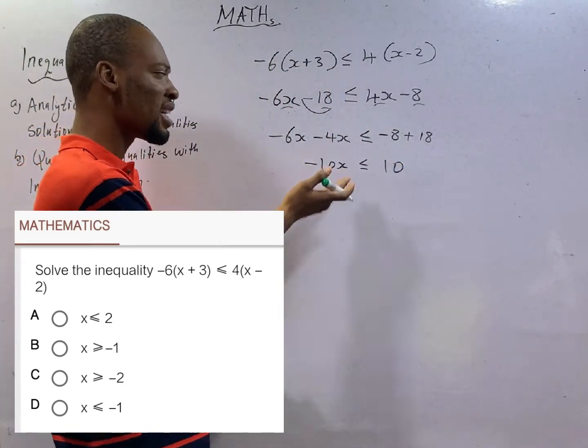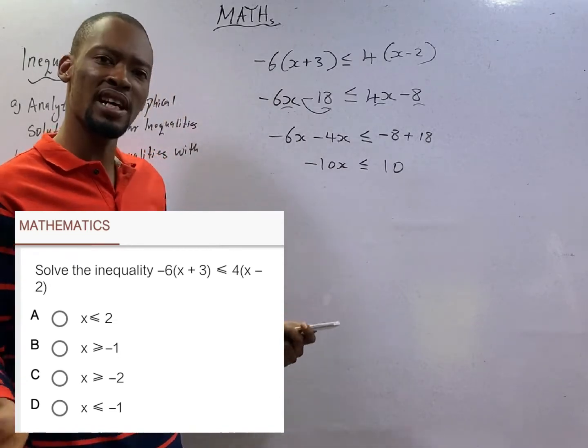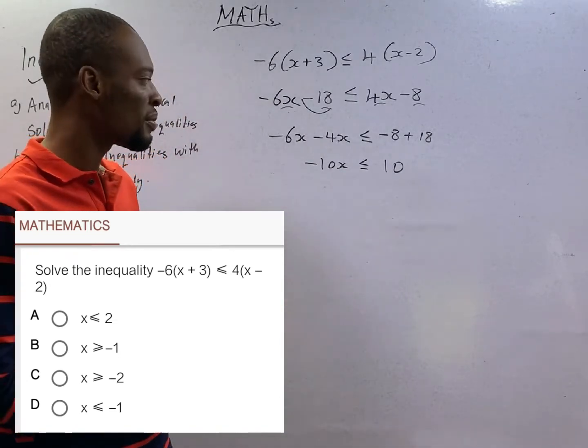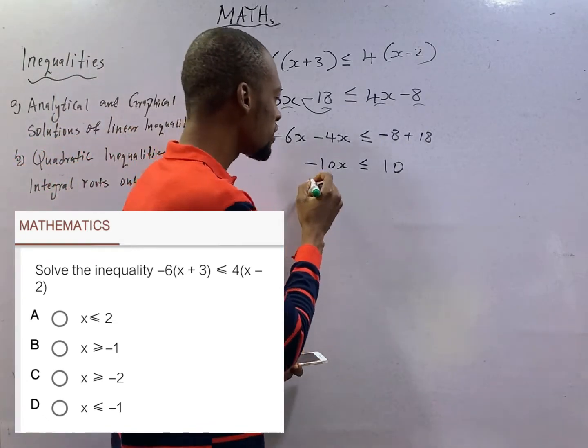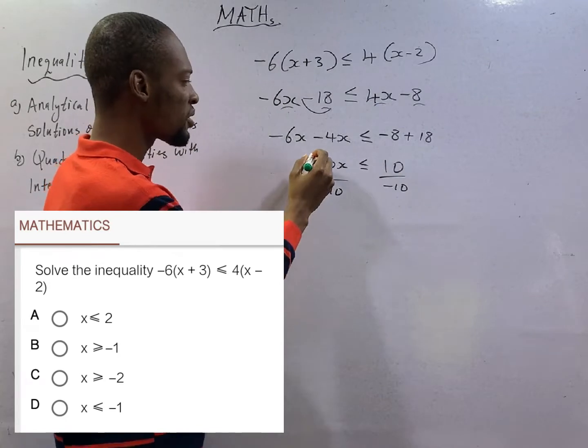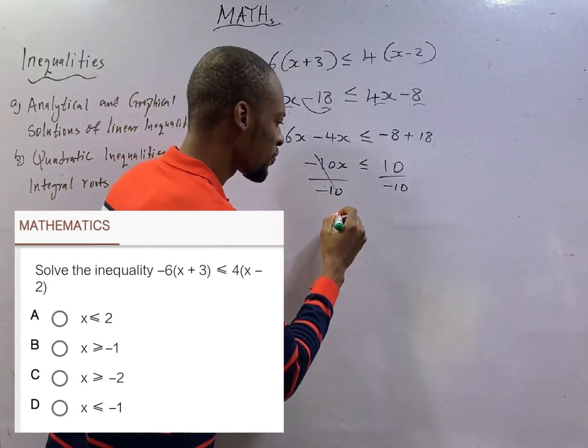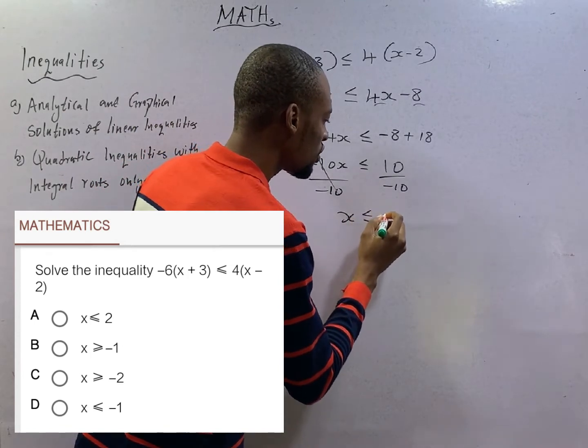Now, we are looking for x and not -10x. To do that, we divide both sides by -10. If you divide it by -10 and you divide it by -10, -10 divided by -10, that is 1. So x becomes less than or equal. No.